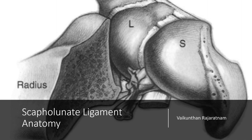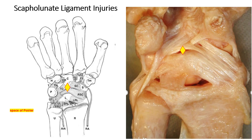In this lecture we're going to talk about the anatomy of the scapholunate ligament, a very important ligament between the scaphoid and the lunate in the wrist. The ligaments in the wrist can be basically divided into extrinsic ligaments, which connect the radius and the ulna to the carpus, and the intrinsic ligaments, which are ligaments between the carpal bones. There is an area in the centre known as the space of Poirier, which is fairly deficient of ligaments and prone for dislocation of the carpus.